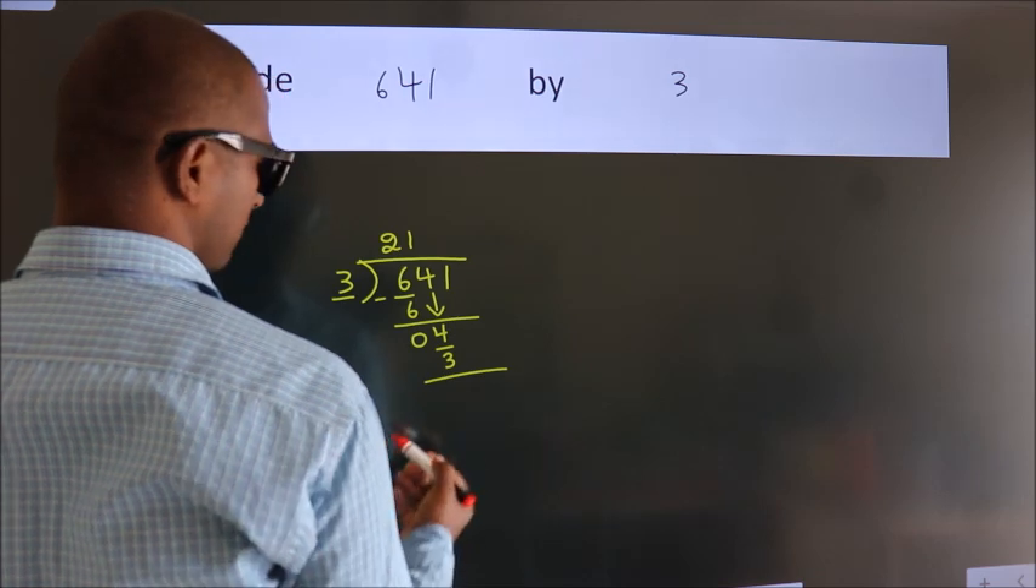After this, bring down the beside number, so 4 down, so 4. A number close to 4 in 3 table is 3 1s, 3. Now, we subtract, we get 1.